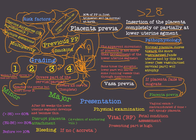Grade 1 and grade 2 are also called minor placenta previa. Grade 1 is within 5 centimeters of the cervix; grade 2 reaches the cervix but doesn't cover it. Grade 3 covers part of the cervix — partial placenta previa. Grade 4 covers all the cervix — complete placenta previa. Grade 3 and grade 4 together are called major placenta previa.